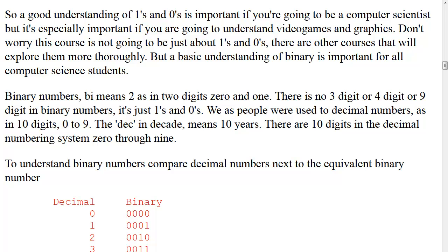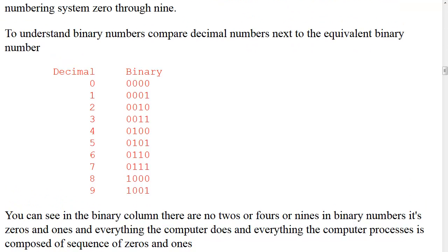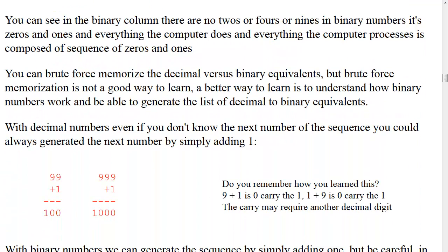We as people are used to decimal numbers — ten digits, zero through nine. The 'dec' in decade means ten years, and there are ten digits in the decimal numbering system. To understand binary numbers, compare decimal numbers next to their binary equivalents. Decimal 2 is binary 0010. Decimal 5 is binary 0101. Decimal 9 is binary 1001. In binary there are no twos, fours, or nines — it's just zeros and ones, and everything the computer processes is composed of sequences of zeros and ones.